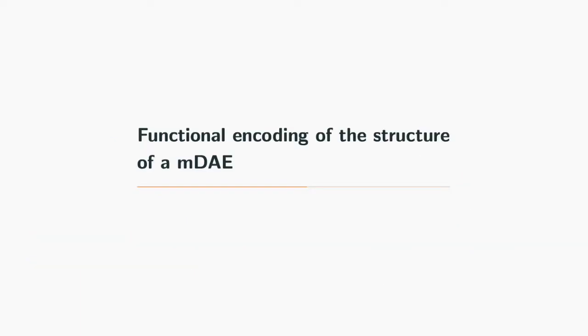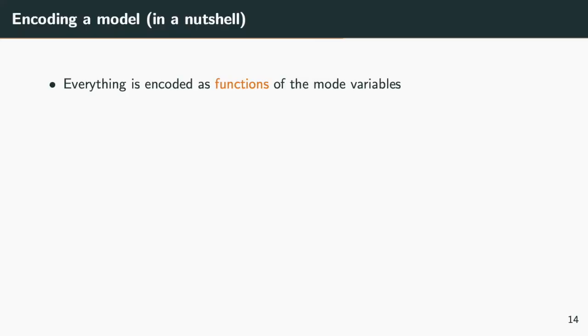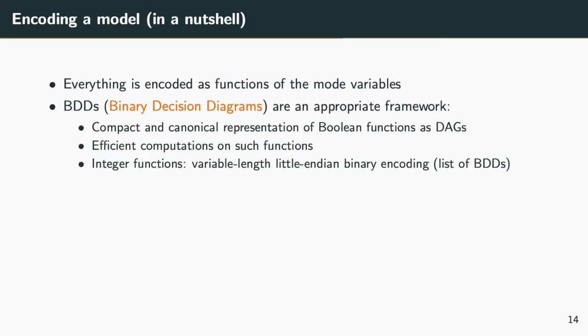Thank you, Matthias. In order to extend this method to multimode systems, we first need a concise representation of the varying structure of a multimode system. This is done by using a functional representation. Modes are described as valuations of boolean mode variables, and we manipulate functions of these mode variables. Binary decision diagrams are a perfect fit in this context.